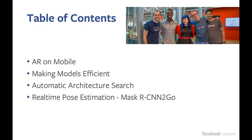Today we'll talk about a few different topics. I'll show a few examples of AR on mobile devices. Since we're actually running things on mobile devices, we need to be able to make models that can actually run efficiently. We try to make them efficient, and another way to do this is doing neural architecture research. And finally, I'll show an open-source version of Mask RCNN Go and talk about how we made it fast.